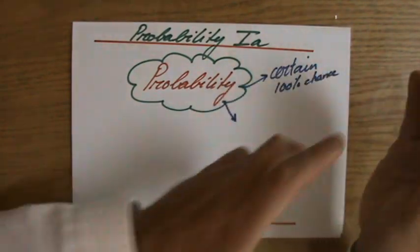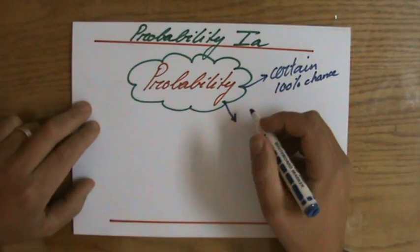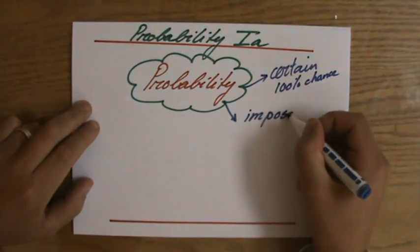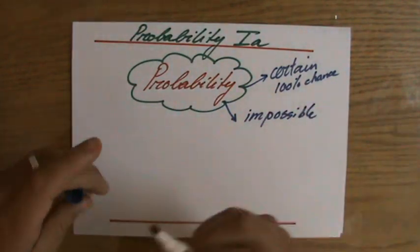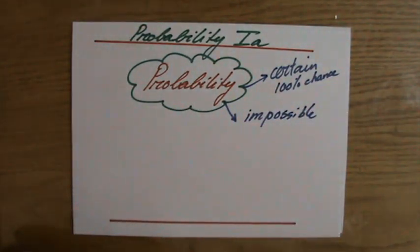Well, what is the opposite of certain? Impossible. Do you agree with that? Impossible. It is absolutely impossible that between now and the next 10 seconds I'm going to see a pink elephant flying through the room. That's impossible. It's not going to happen.